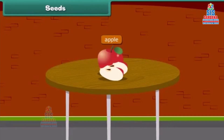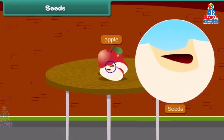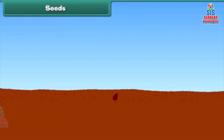When we cut an apple, what do we see at the center? We see small dark brown seeds. Other fruits have seeds inside them, such as papaya and mango. Do you know that a new plant grows from a seed?